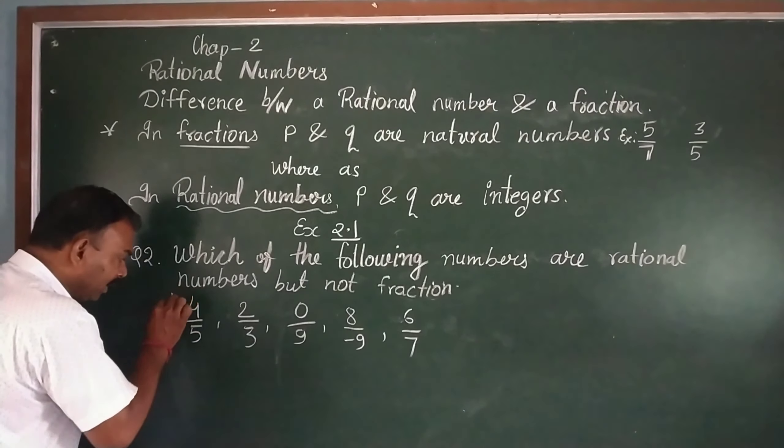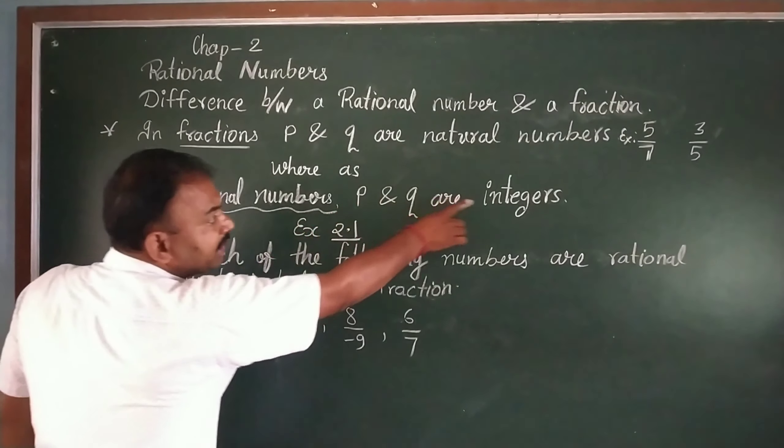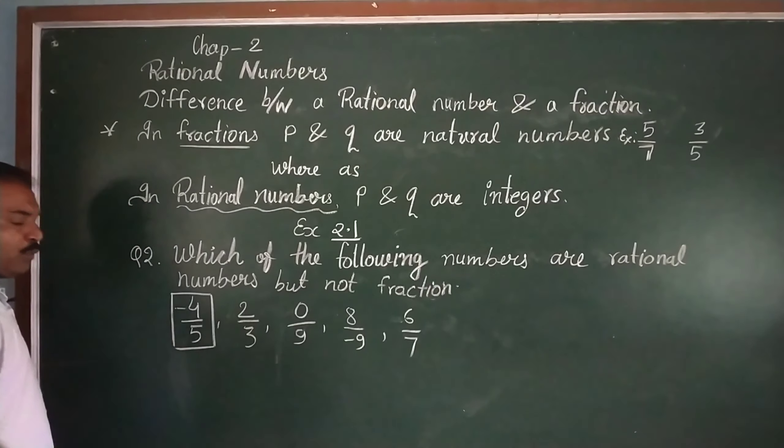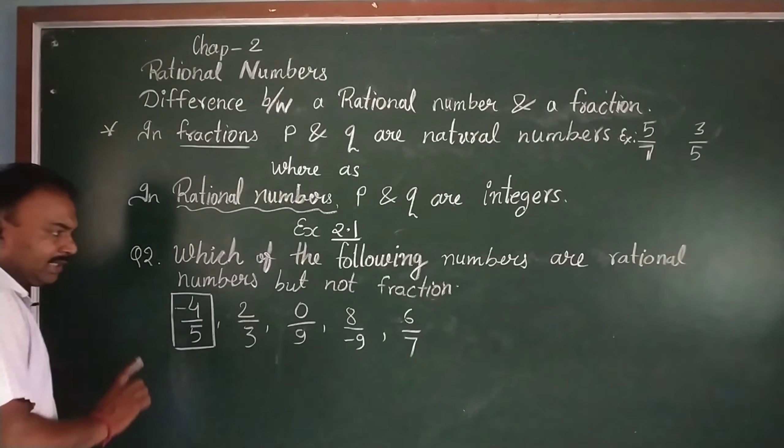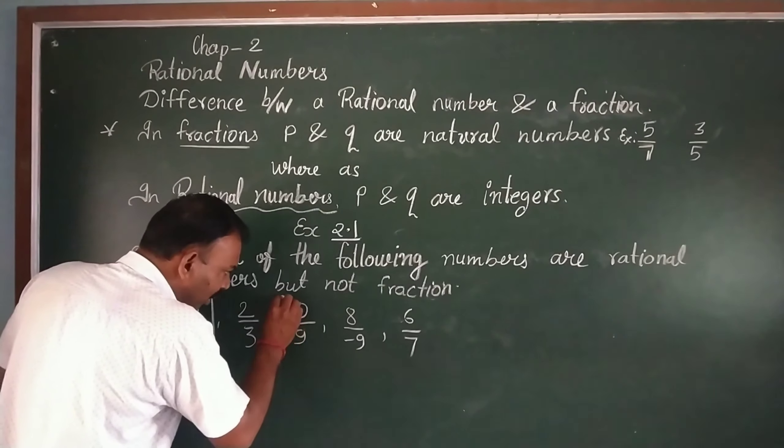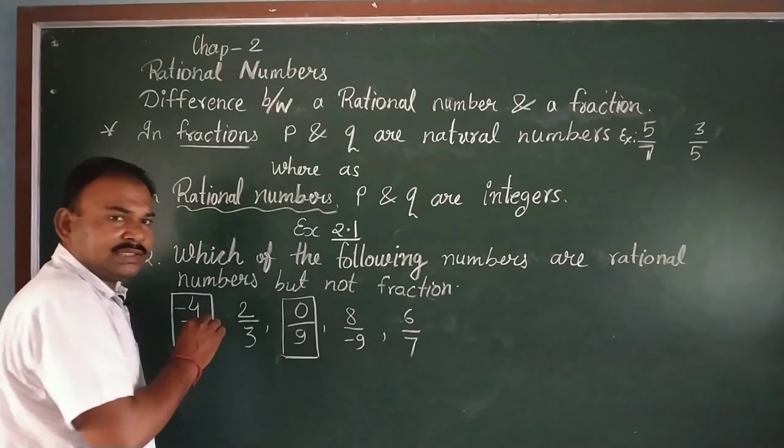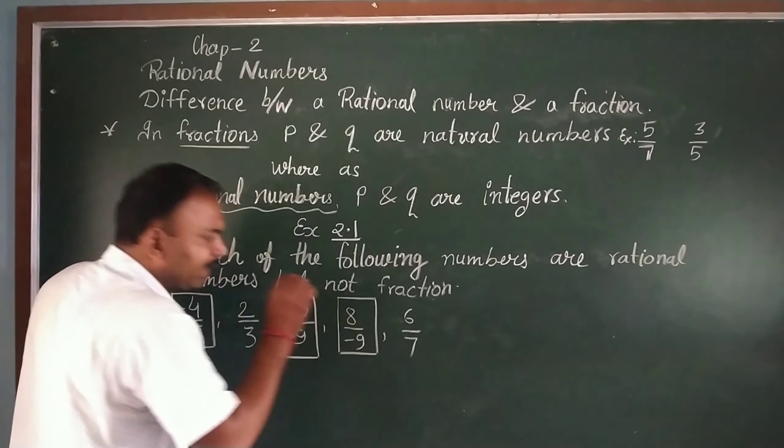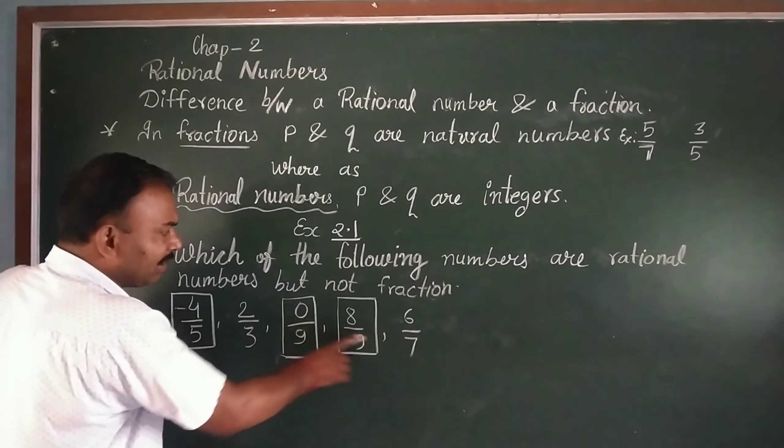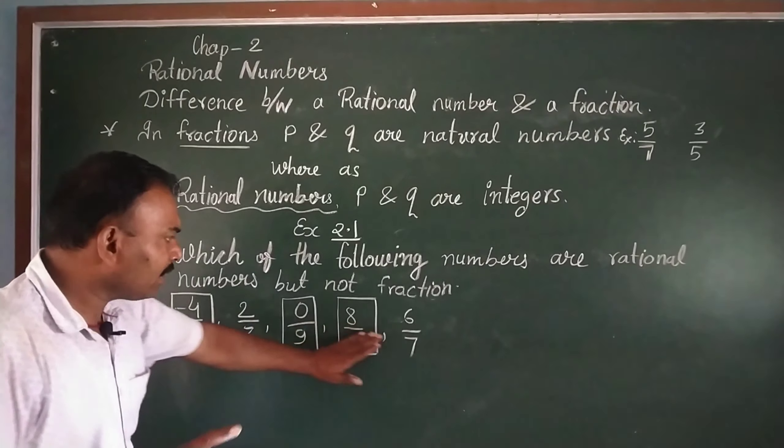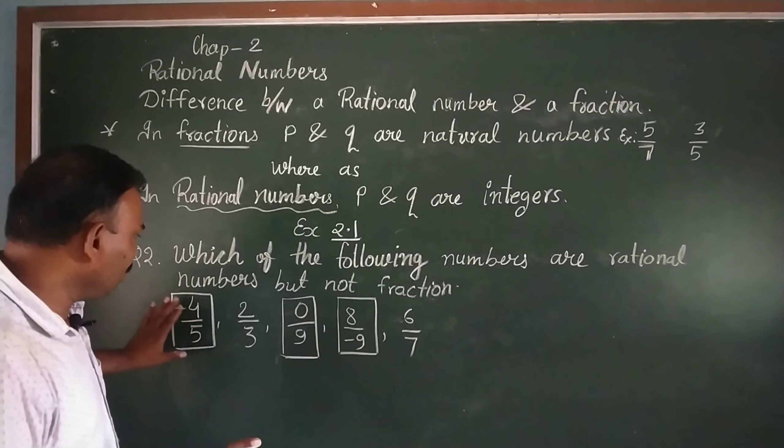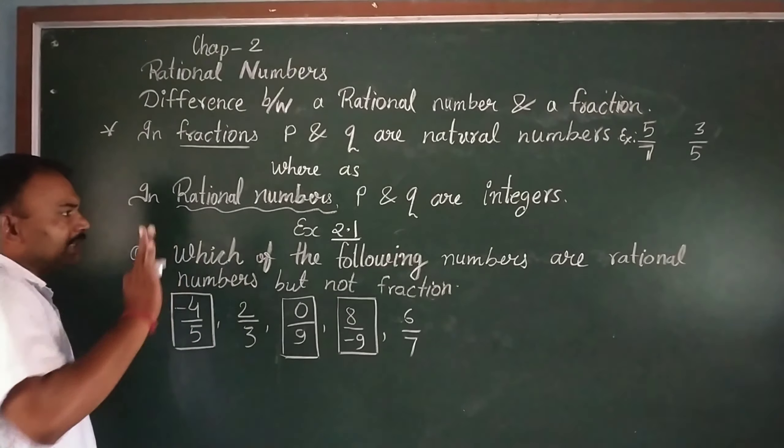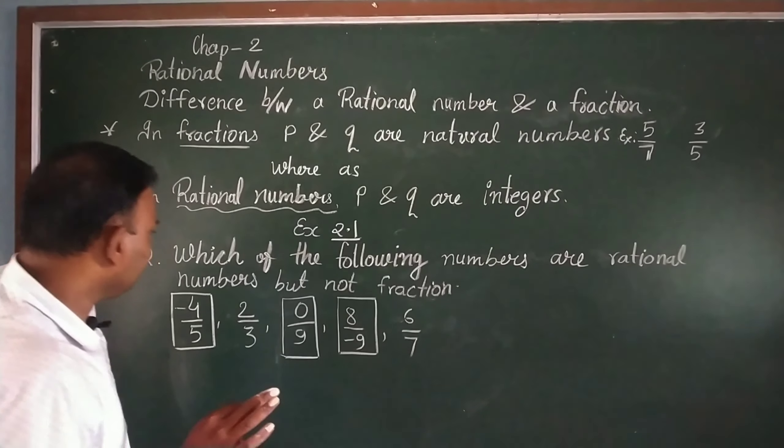If we say rational numbers, how should they be? P and Q are integers. So here we have minus 4 upon 5, it is a rational number. 0 upon 9, it is also a rational number. And 8 upon minus 9, it is also a rational number. And remaining are fractions. These are fractions. And what are under circle? These are rational numbers. Thank you.